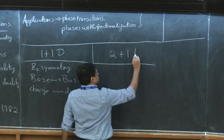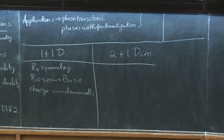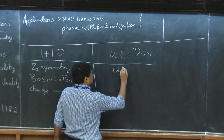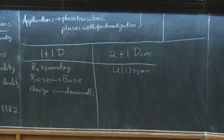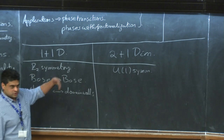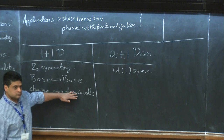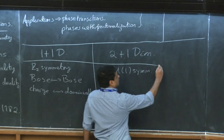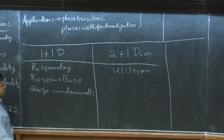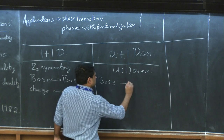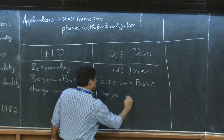Now if you want to go up to two plus one dimensions and pursue an analogous line of reasoning, you need to change your symmetry. With just Z2 symmetry, the domain walls are no longer particles, so to really keep this parallel it makes sense to change what the global symmetry is. So again we're going to look for a duality between bosons — a duality between charges and vortices. Vortices are going to be point particles in two plus one dimensions. We can develop a theory either in terms of charges or in terms of vortices.